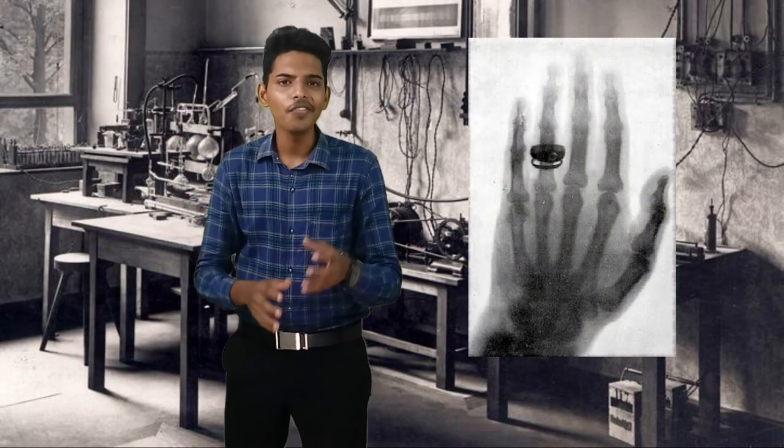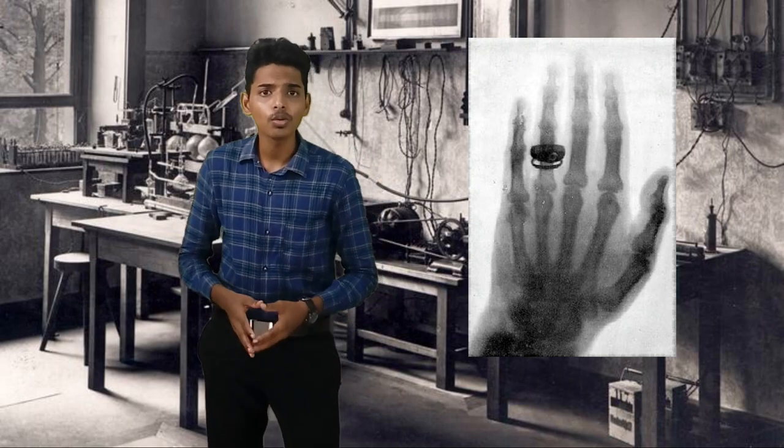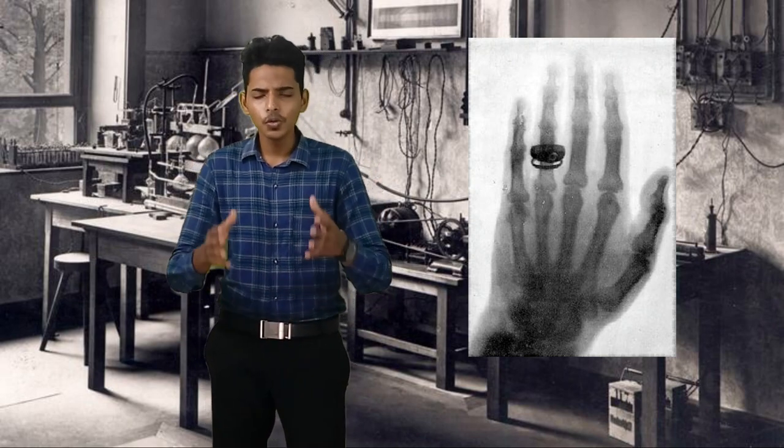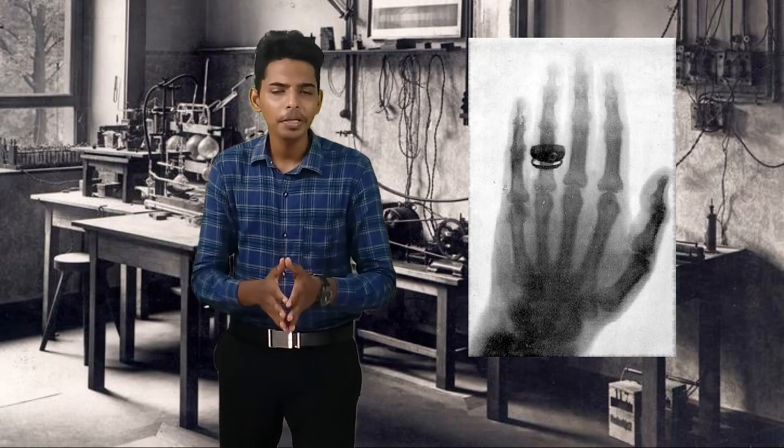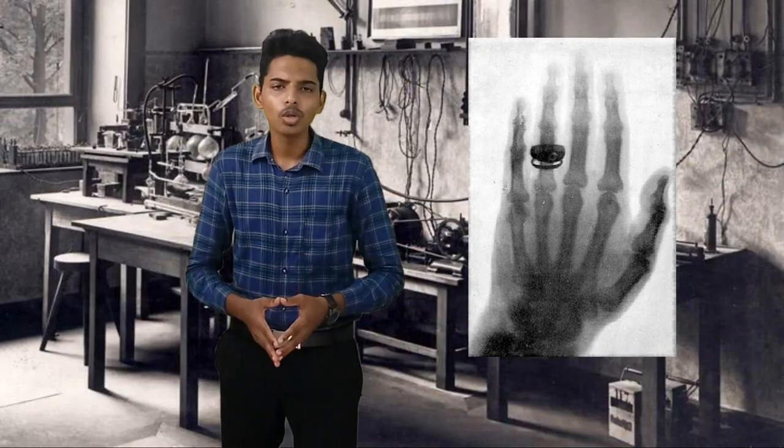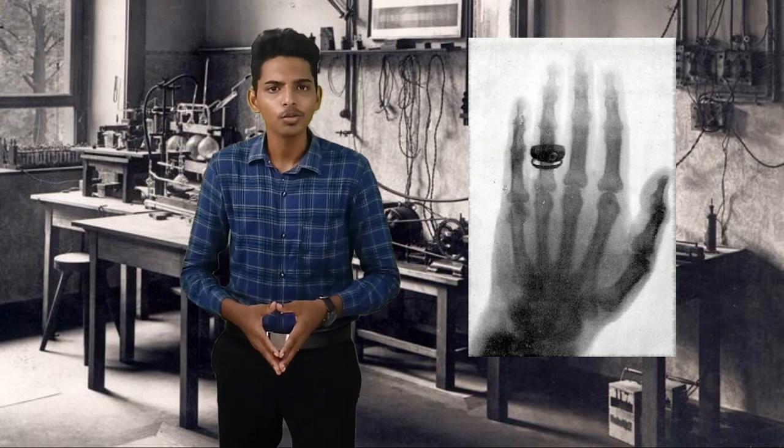Three days before Christmas, he brought his wife Bertha to his laboratory and he exposed her left hand to these rays by replacing the fluorescent screen with a photographic plate. After the plate was developed, she noticed that the bones and the wedding ring she was wearing were visualized on the image. This was the first ever X-ray image of the human body, though it was not used for diagnostic purposes.